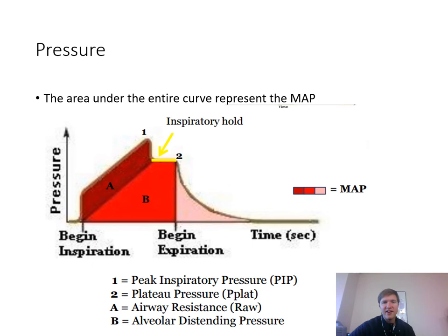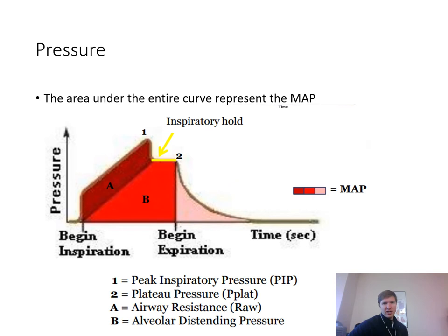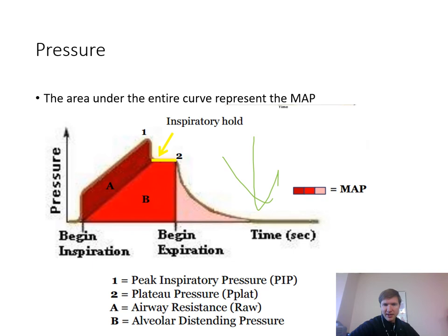On the pressure scalar, the area under the entire curve represents mean airway pressure. Mean airway pressure is very important for hemodynamics, intracranial pressures, cerebral perfusion pressures, and atelectasis management. Everything from the beginning of inspiration until the patient reaches back down to baseline represents mean airway pressure — including peak airway pressure, plateau pressures, airway resistance, and alveolar distending pressure. Peak inspiratory pressure usually represents dynamic compliance but can also represent resistance and static compliance.